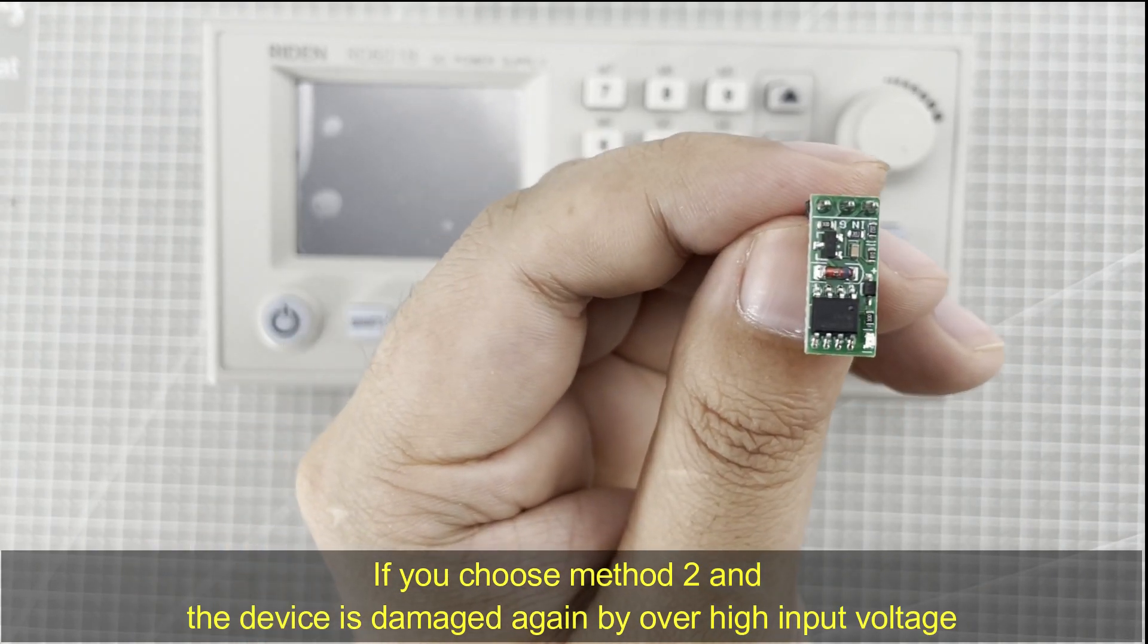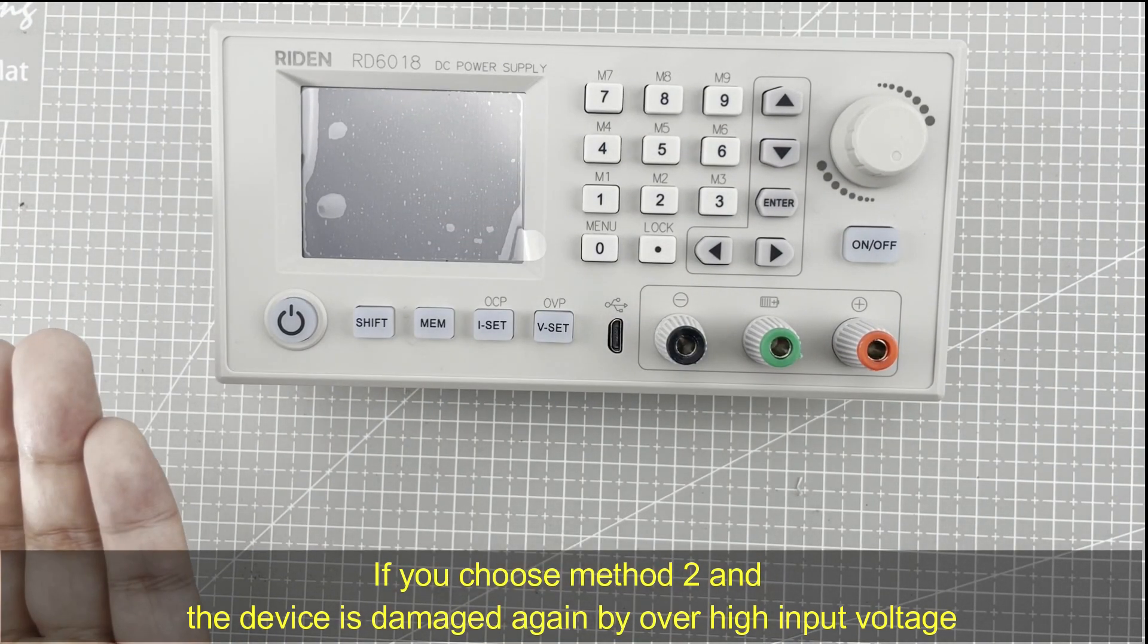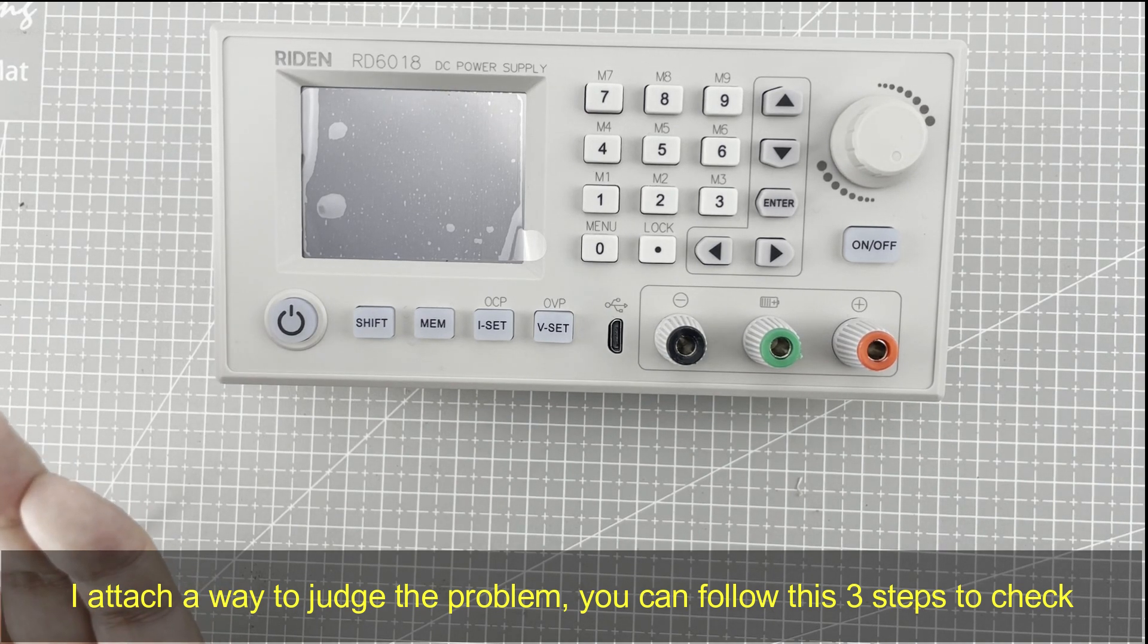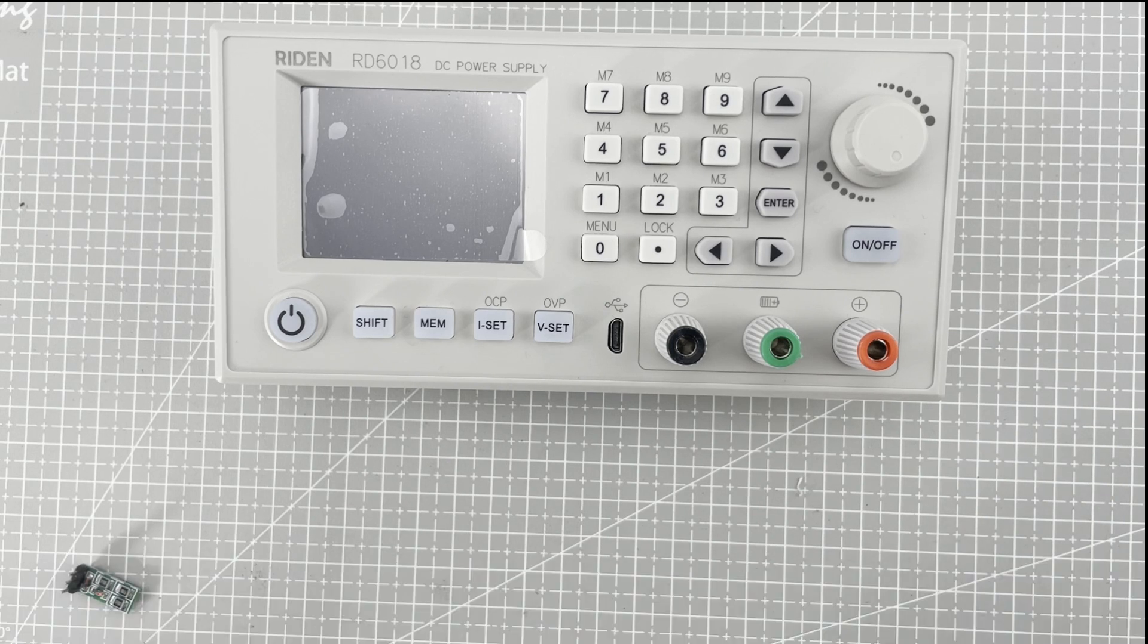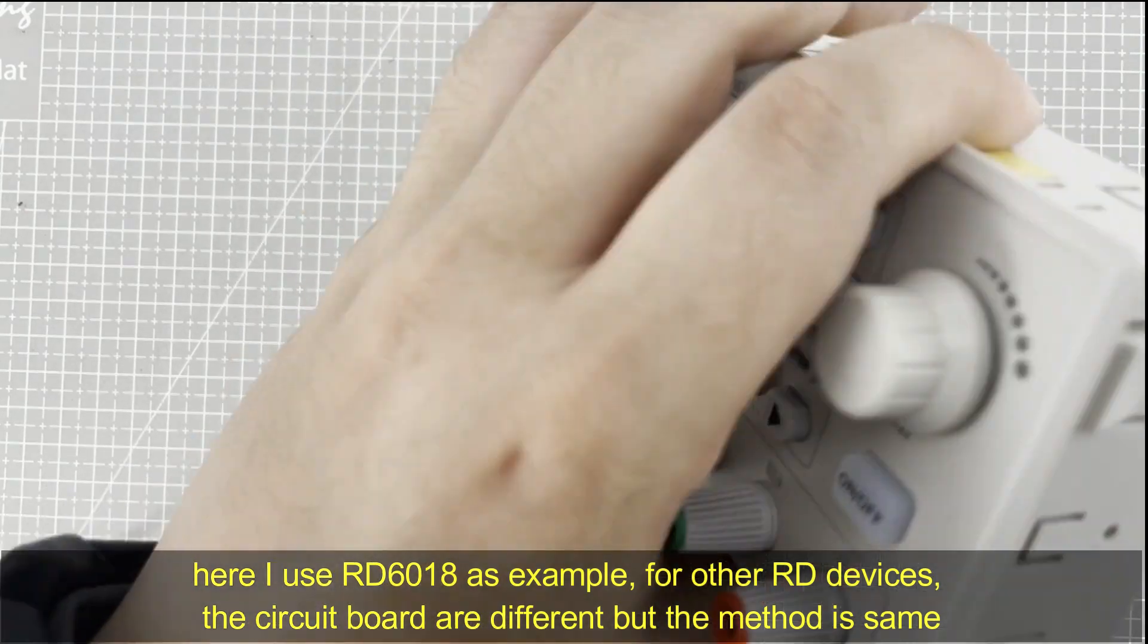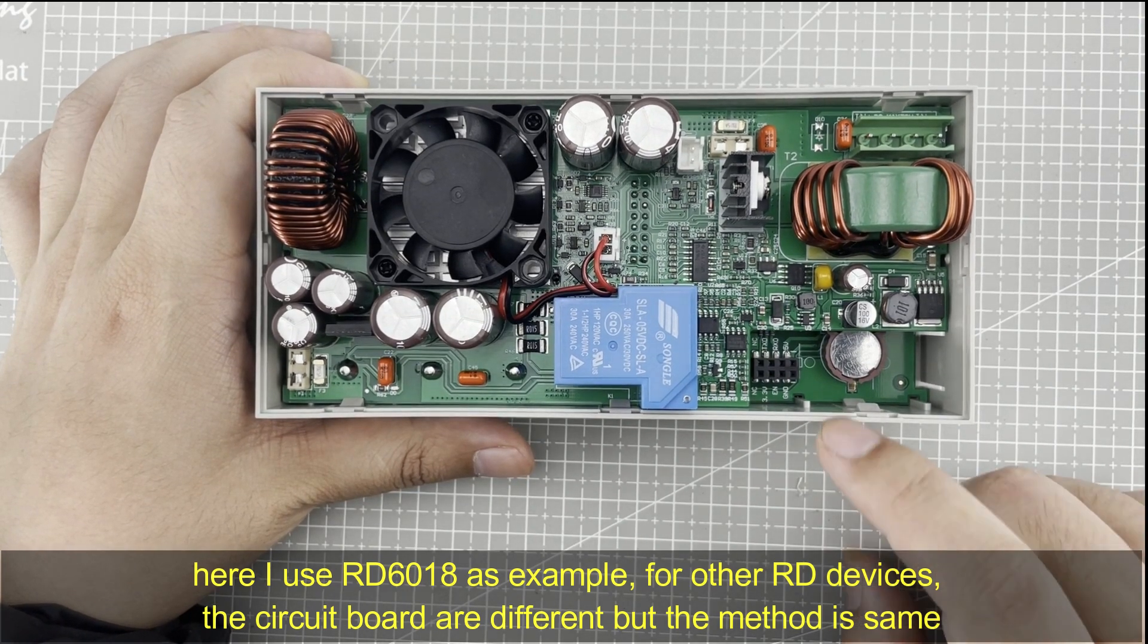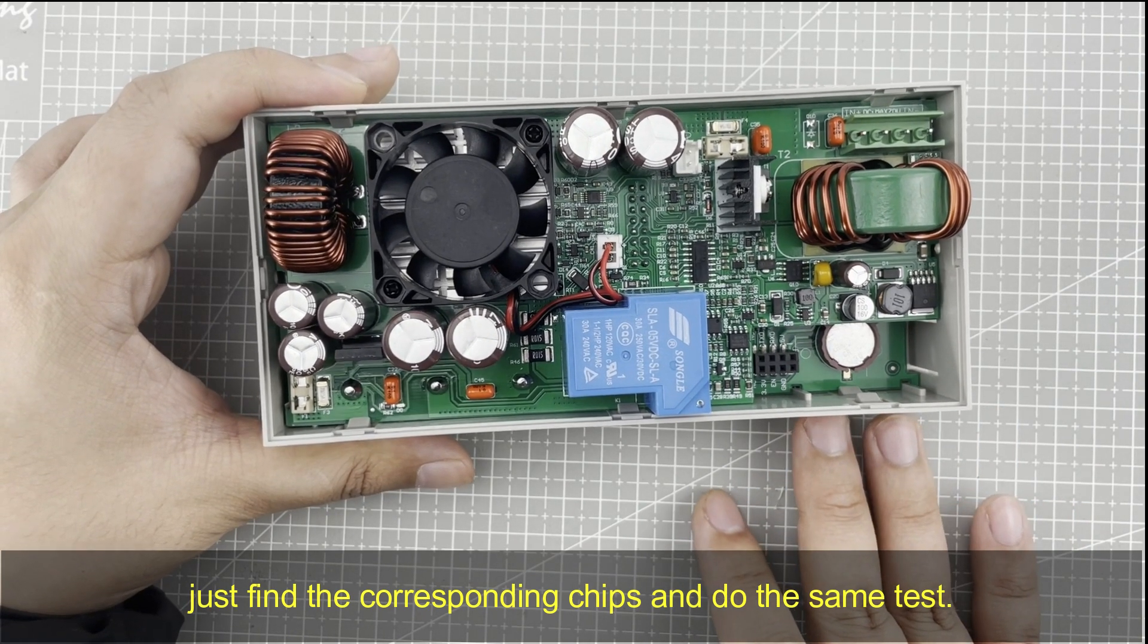If you choose method 2 and the device is damaged again with over high input voltage, I attach a way to judge the problem. You can follow these three steps to check. Here I use RD 6018 as an example. The circuit board of each RD series power supply is different, but the method is the same. Just find the corresponding chips and do the same test.